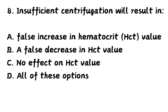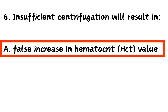Question number 8. Insufficient centrifugation will result in: Option A, false increase in hematocrit value. Option B, false decrease in hematocrit value. Option C, no effect on HCT value. Option D, all of these options. The right answer is Option A, false increase in hematocrit value. If centrifugation is insufficient, it will not pack the cells correctly, so it will result in a false increase in PCV.